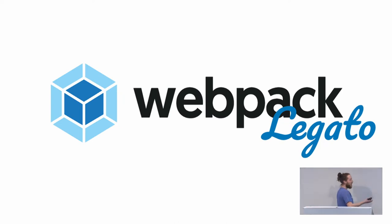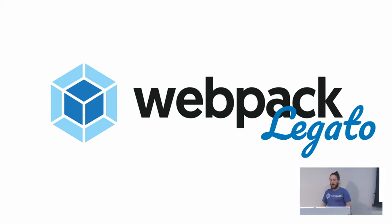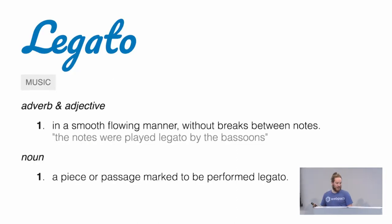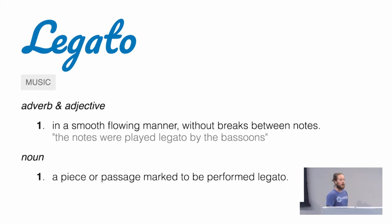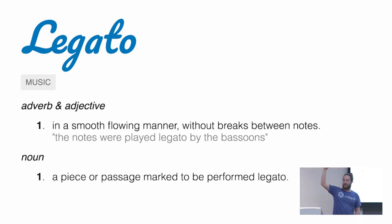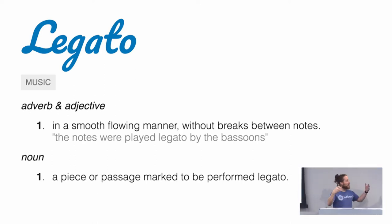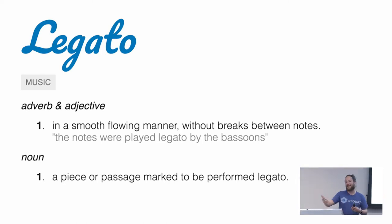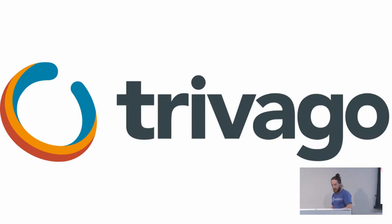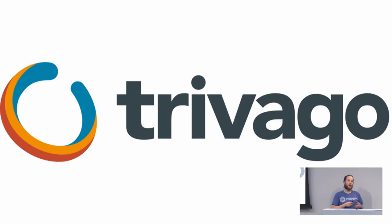What you might not have known is that we have a code name for Webpack 4 called Legato. So why did we call it Webpack Legato? Legato means to play notes in a flowing manner without gaps — connected together. This title was given by our major sponsor, Trivago.